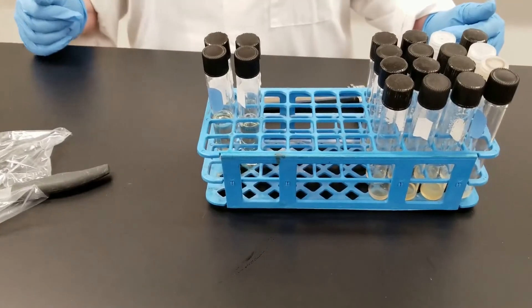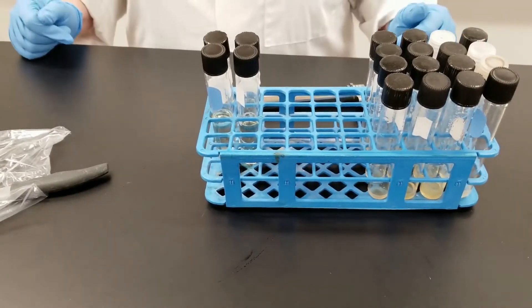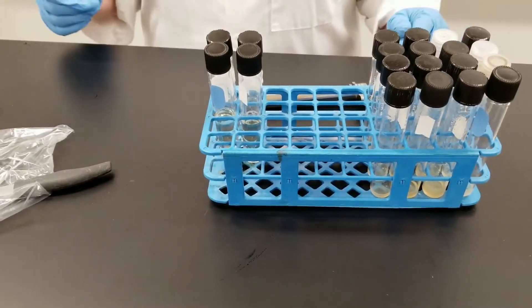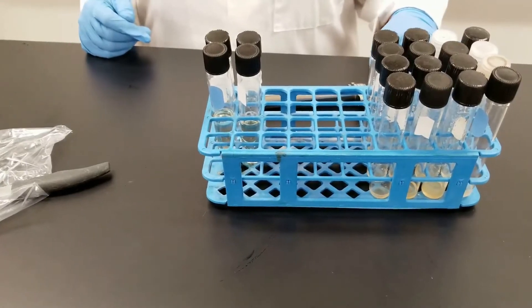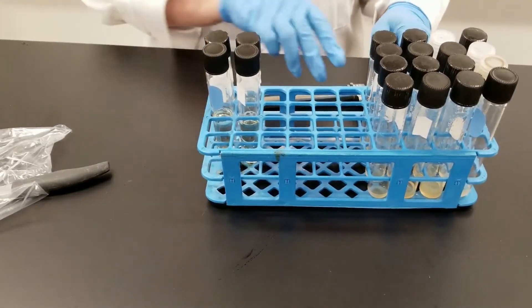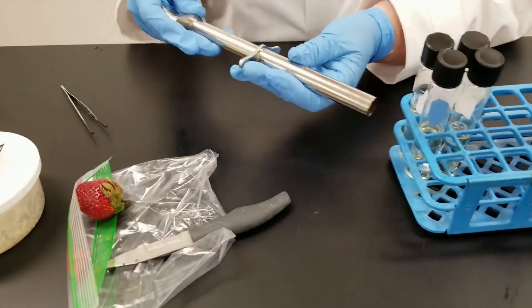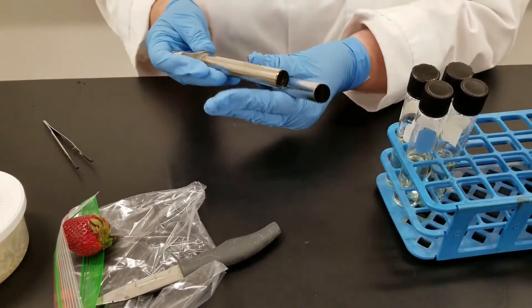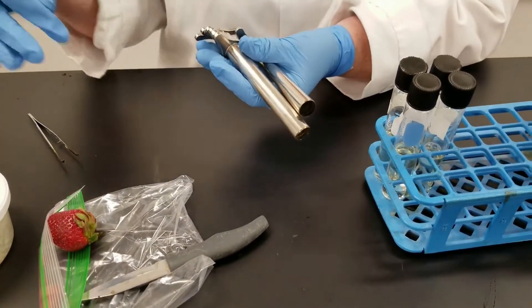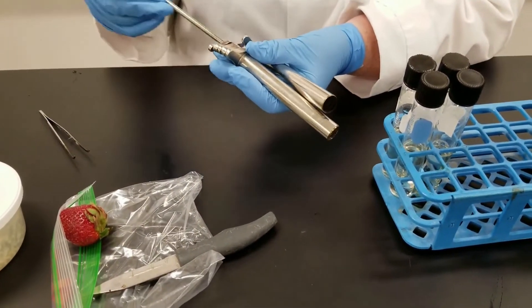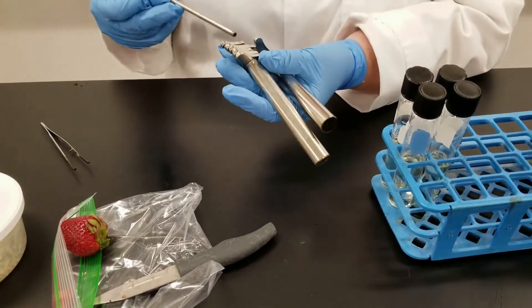You can grow fungi on agar plates like you do bacteria. We don't use an inoculating loop to do that because of the fact that they do grow differently. We often use this type of an apparatus. You can select what size of a plug you want to pull out from a petri dish and transfer to a next one, whether you want a smaller size or a larger one.